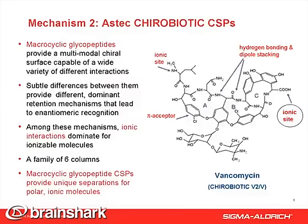Mechanism 2: Chirobiotic columns. Macrocyclic glycopeptides provide a multi-modal chiral surface capable of a wide variety of different interactions. The subtle differences between them provide different dominant retention mechanisms that lead to enantiomeric recognition. Among these mechanisms, ionic interactions dominate for ionizable molecules. They are a family of 6 columns so far. On the right, vancomycin is shown. All interactions possible are within the molecule — there are two ionic-sided peptide chains for hydrogen bond and dipole interactions, pi-pi on the bending rings, and an ABC cavity for steric interactions. Most importantly, the carboxyl group on the right side is responsible for all the basic molecule separations under the right condition.